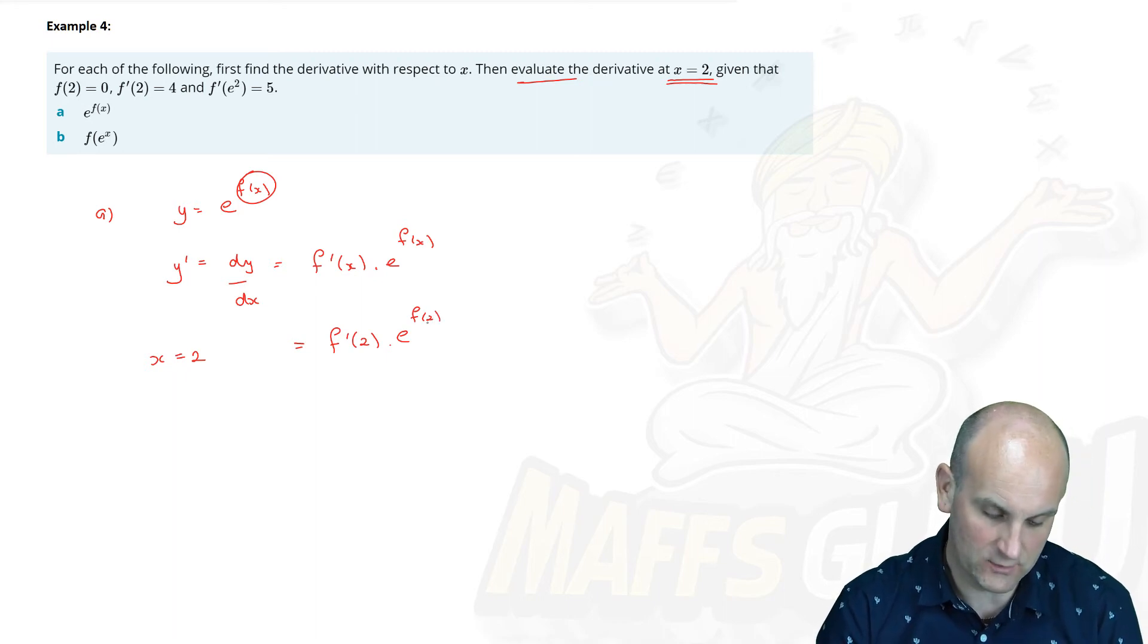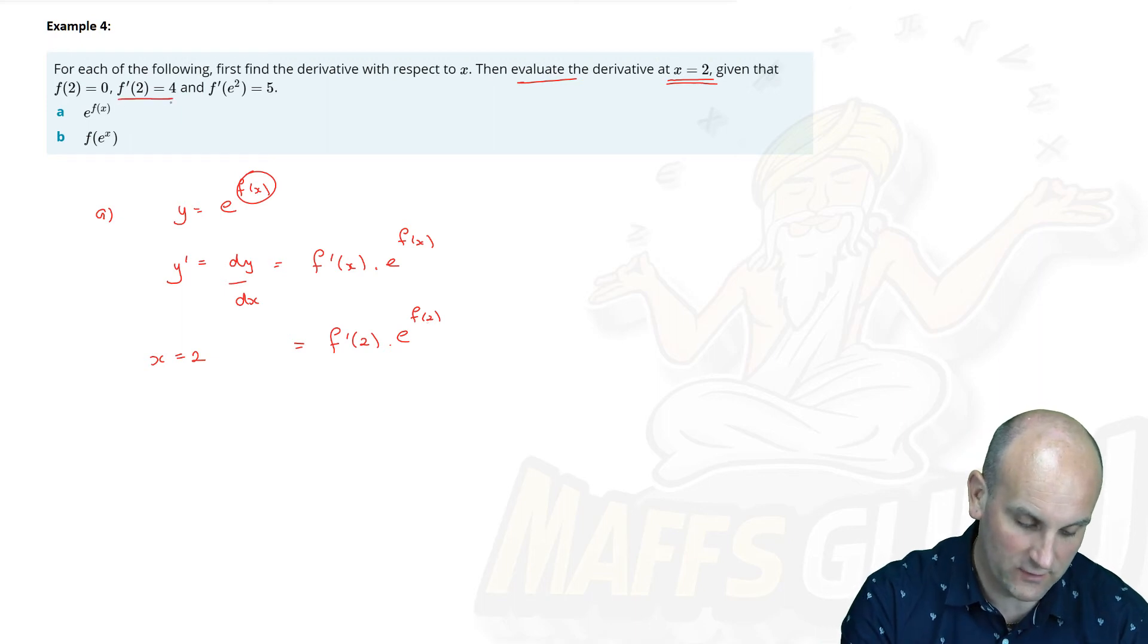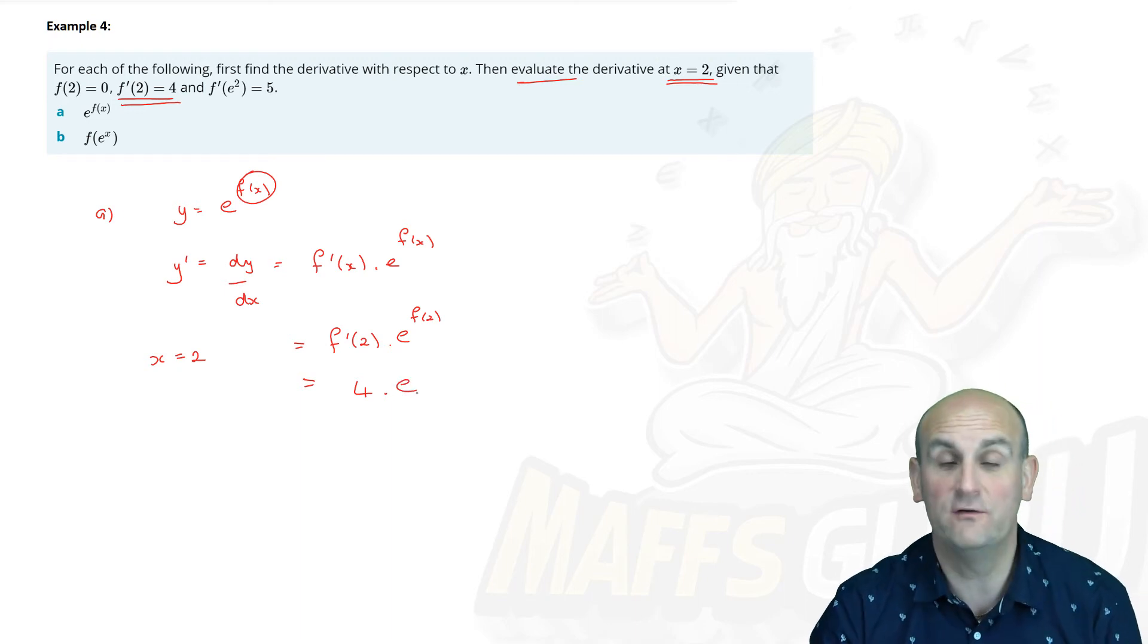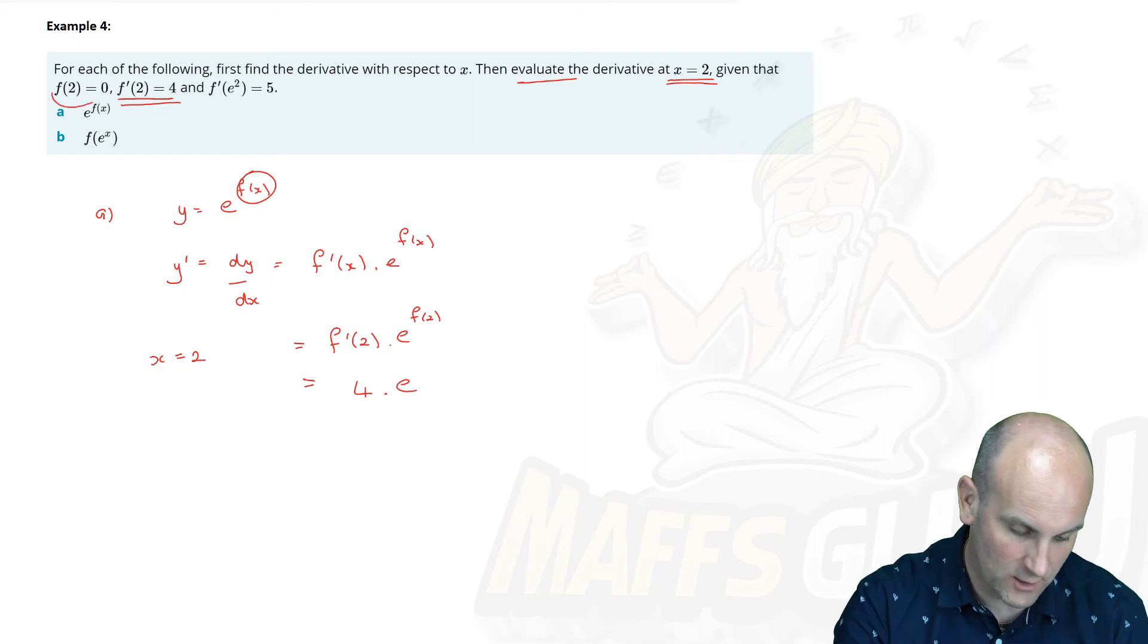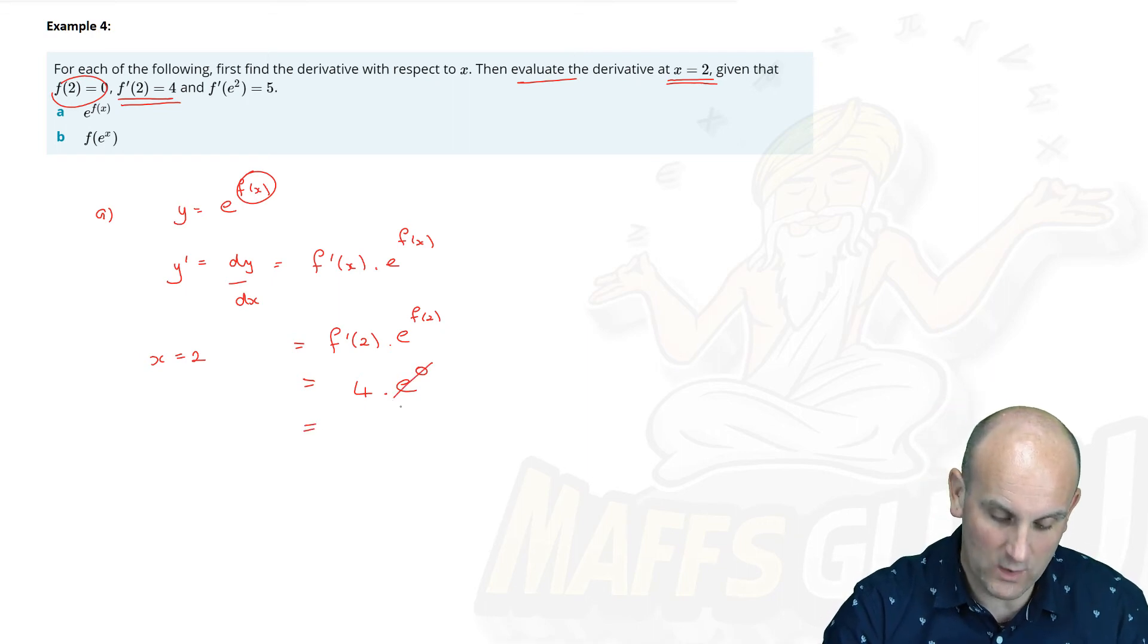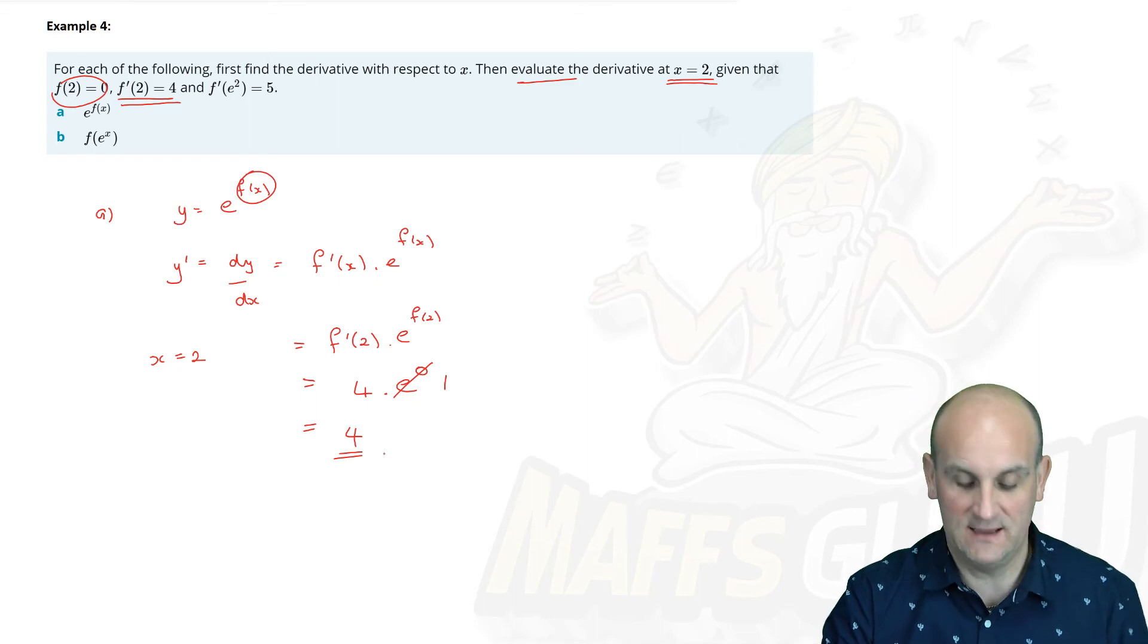So we now know that dy/dx becomes f'(2) times the e^(f(2)). Where is that information in my question? Well, do we have f'(2)? Oh, we do. Thank you very much. We've got f'(2) is equal to 4. And we're going to multiply that by the f(2), or sorry, e to the power of f(2). Well, do I know what f(2) is? Oh, I do. It's 0. So there is e to the power of 0. So all I'm doing is pattern spotting, really. e to the power of 0 is 1. And so there we go. Part A works out to simply be 4. Job done.